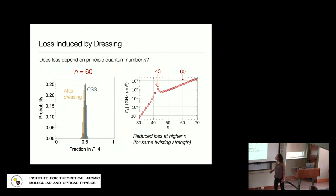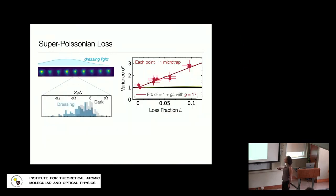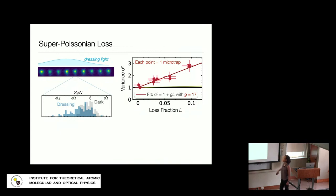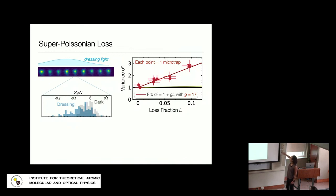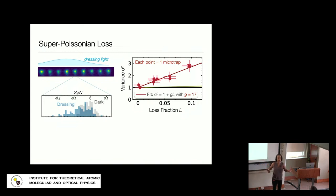Even with the better Rydberg state, if you apply the light for longer there's still loss that's problematic for squeezing. Looking at the same type of histogram in our array of microtraps — where inhomogeneous dressing-light intensity across traps lets us extract statistics at different intensities in parallel — I've plotted the width of this histogram as a function of loss fraction, where each point is a different trap. The slope of variance versus loss fraction is substantially larger than one, indicating a super-Poissonian loss process. This directly tells us atoms are being lost in groups, which is much worse for squeezing than single-body loss.